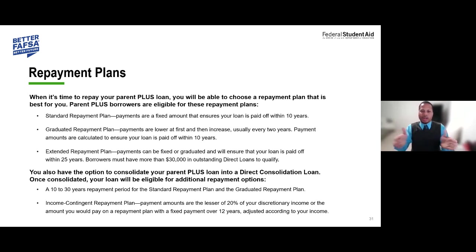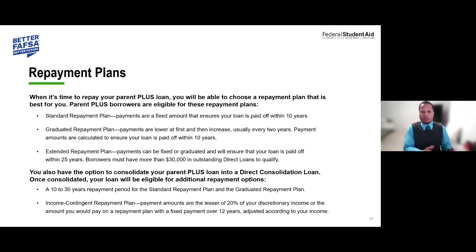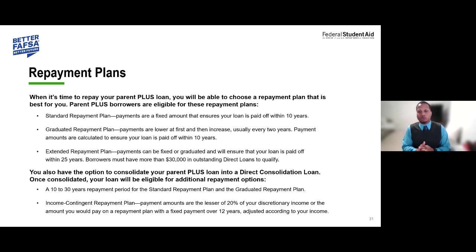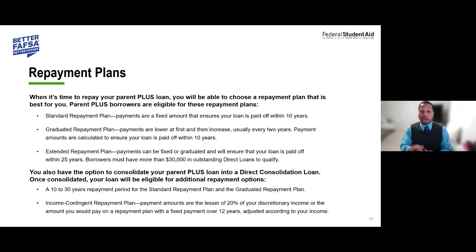If you consolidate and enroll in an Income Contingent Repayment (ICR) plan, payments are generally assessed at 20% of your discretionary income over a 12-year fixed repayment period. We also have a loan simulator at StudentAid.gov — scroll down to the loan section of the site to access it and run different scenarios for the various loan repayment programs available.